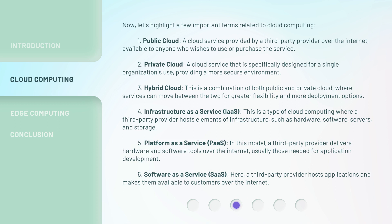4. Infrastructure as a Service (IaaS): a type of cloud computing where a third-party provider hosts elements of infrastructure, such as hardware, software, servers, and storage. 5. Platform as a Service (PaaS): in this model, a third-party provider delivers hardware and software tools over the internet, usually those needed for application development. 6. Software as a Service (SaaS): a third-party provider hosts applications and makes them available to customers over the internet.